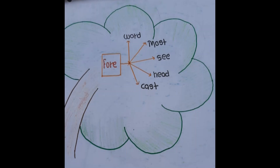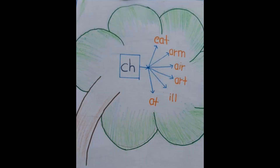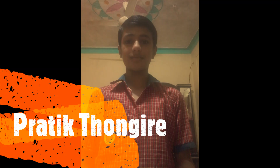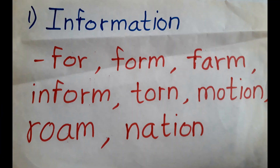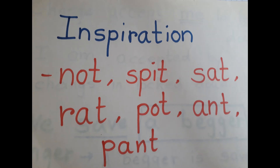Foremost, foresee, forehead, fore-card. Unfinished, unfriendly, undone, unknown. Information: form, from, farm, inform, turn, motion, Rome, nation. Monotonous: not, us, on, to, turn, none. Inspiration: not, speed, set, rat, pot, ant, pan.